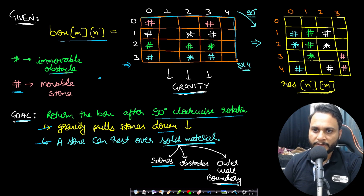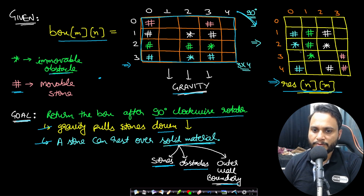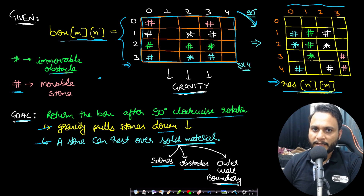After rotating 90 degrees clockwise, this will be the resultant matrix. The m by n matrix becomes an n by m matrix — the number of rows converts to the number of columns and the number of columns becomes the number of rows. We need to return this result as our answer.